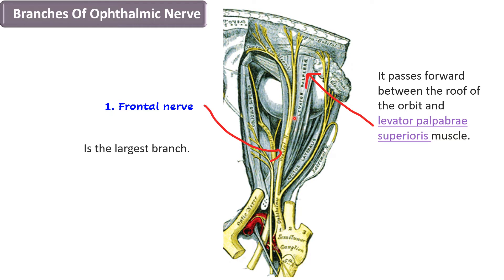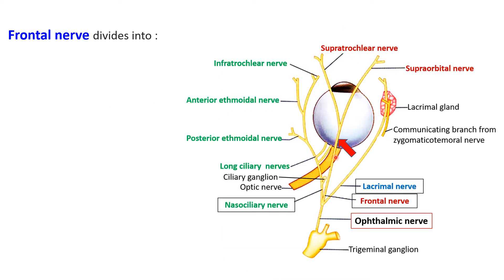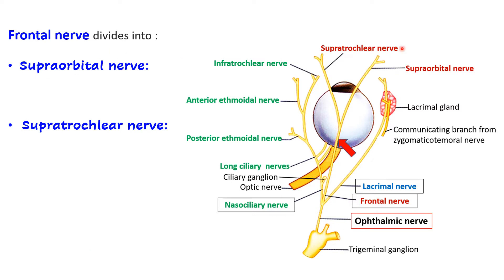Somewhere in the middle of the orbit, the frontal nerve divides into its two terminal branches: the supratrochlear nerve, which is medially placed, and the supraorbital nerve, which is more laterally placed. They leave the orbit and emerge on the face just above the supraorbital margin.